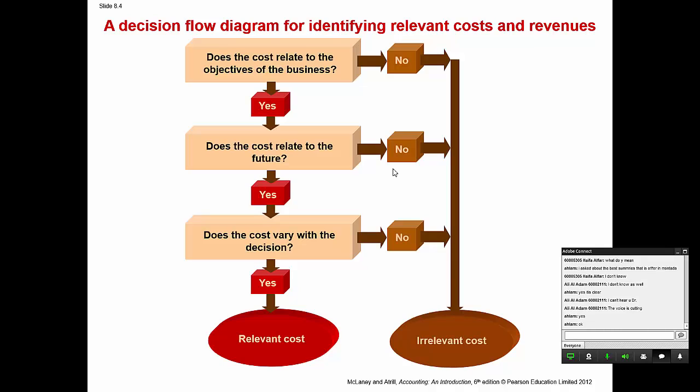What is the meaning of relevant versus irrelevant cost? The relevant cost is the cost that we have to consider when we decide to make something in the business. For example, if we want to buy an asset, then the price of this asset is a relevant cost, because based on the price we can decide whether we buy this asset or not. So the relevant cost is the cost that we need to put into consideration during the decision-making process. We can decide whether a cost is relevant or irrelevant based on the flowchart we can see on screen now.